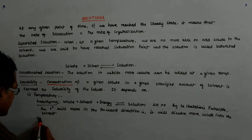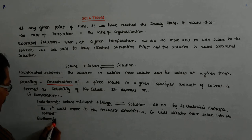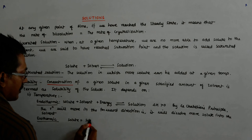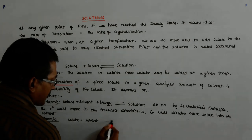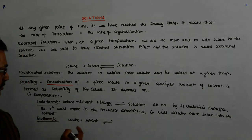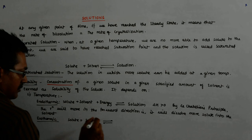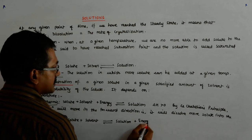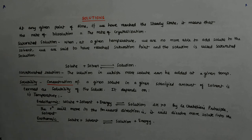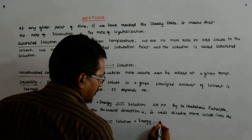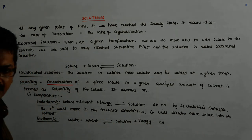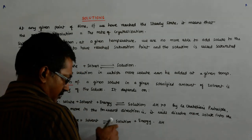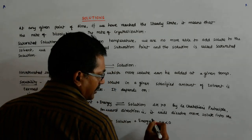What about an exothermic reaction? In an exothermic reaction: solute + solvent → solution + energy. Energy is released, exo. So the energy of the solution has to be less than that of the reactants. Therefore, delta H has to be negative.